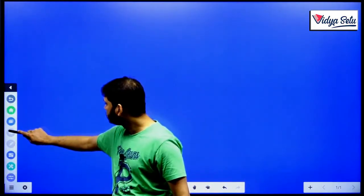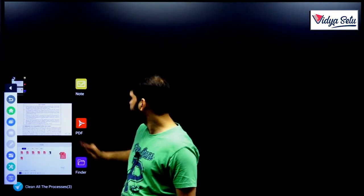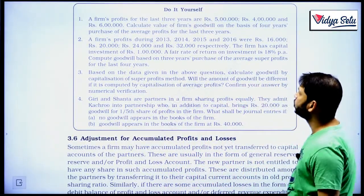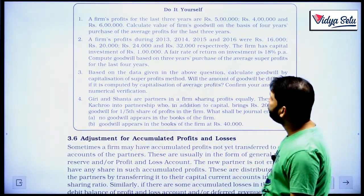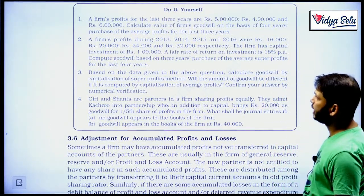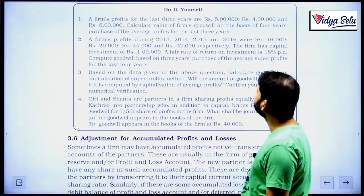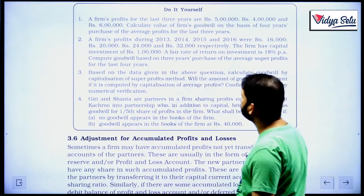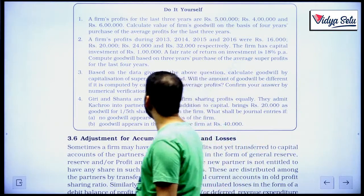Hello everyone. In this video we will be discussing the do-it-yourself questions based on goodwill. Let us check the questions. The first question is: a firm's profit for the last 3 years are 5 lakhs, 4 lakhs and 6 lakhs. Calculate the value of the firm's goodwill on the basis of 4 years purchase of the average profit of the last 3 years.